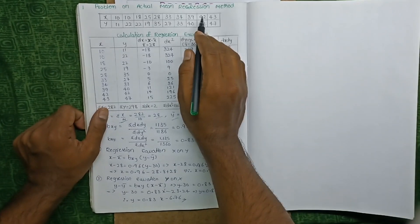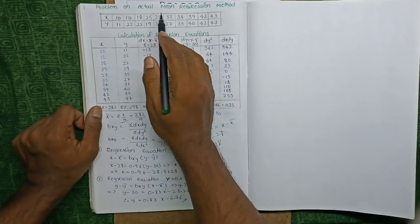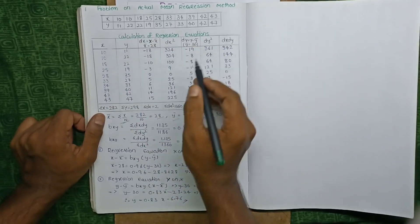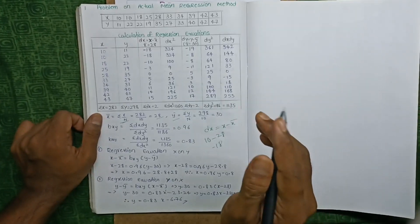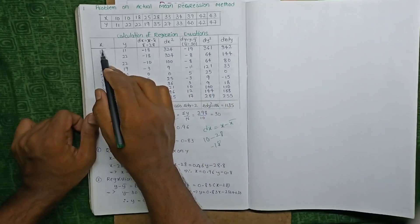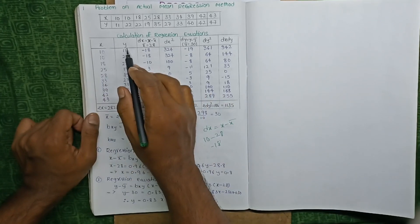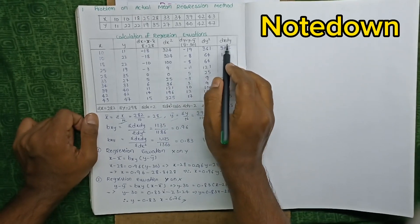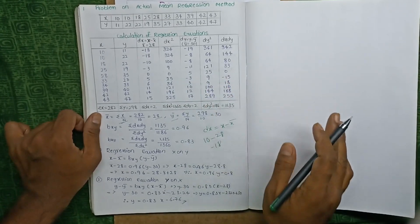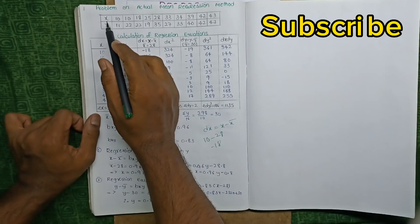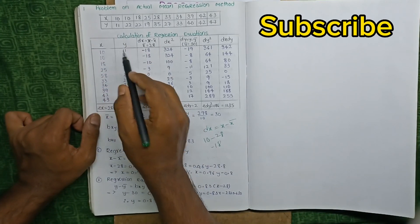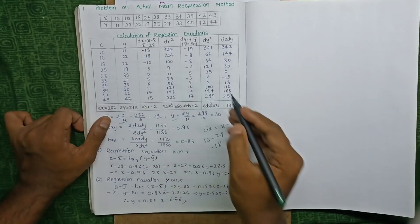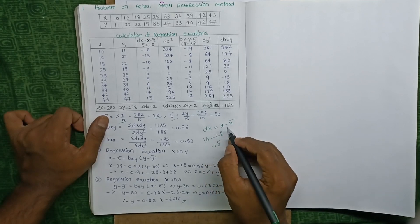Let's discuss the problem: regression sum 1, actual mean method. The question gives an x and y table. To do this sum very easily, just remember the format: x, y, dx, dx², dy, dy², dx·dy. Enter the values of x and y here. To get dx, we need to do dx equals x minus x̄.